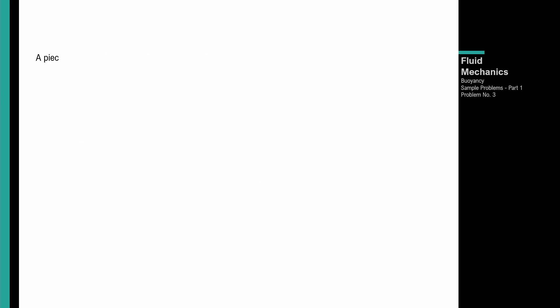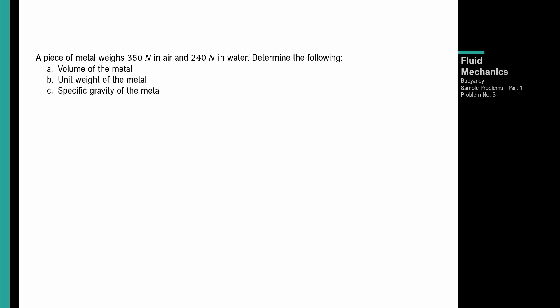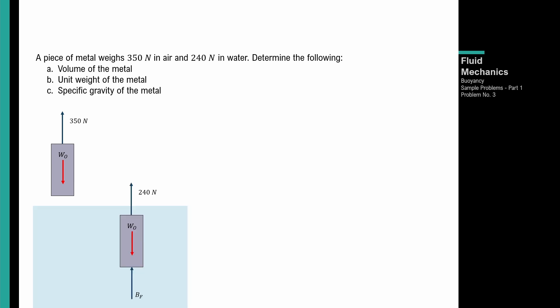Problem number 3: a piece of metal weighs 350 newtons in air and 240 newtons in water. Determine the volume of the metal, its unit weight, and specific gravity. In air, kapag tinimbang mo yung metal, 350 newtons. Kapag submerged sa water, 240 newtons na lang dahil meron ka ng buoyant force.